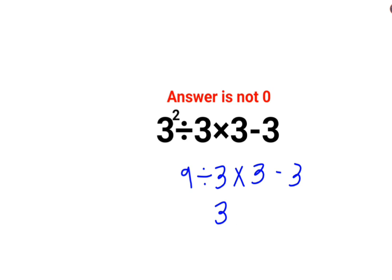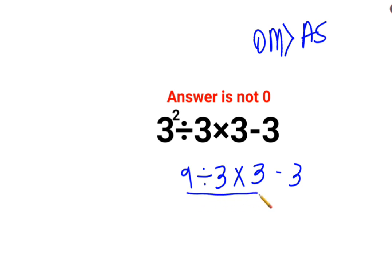Please realize that addition and subtraction always will be lesser than division and multiplication in priority. So first we need to do the whole division and multiplication first, and then you should go and subtract 3 from the answer.